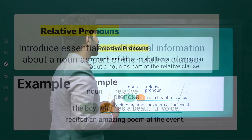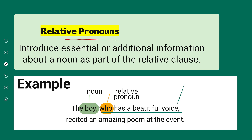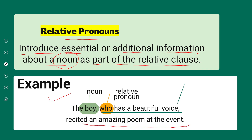Relative pronouns introduce essential or additional information about a noun as part of the relative clause. For example: 'The boy who has a beautiful voice recited an amazing poem at the event.' The noun here is 'boy,' and right after it, you can see the word 'who,' which is a relative pronoun. The following part of the sentence is actually relating to that noun.